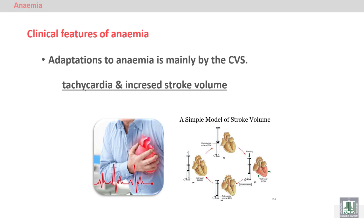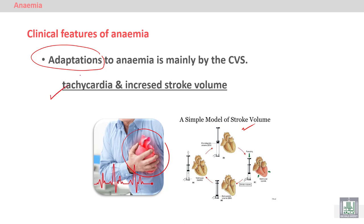Regarding the clinical features and clinical diagnosis of anemia, we find compensatory mechanisms responding to hypoxia, which occurs due to the decrease in red blood cell count and hemoglobin concentration. The heart adapts by increasing heart rate and stroke volume. Clinically, the patient will complain of palpitations, and we will notice tachycardia as a clinical sign of anemia.